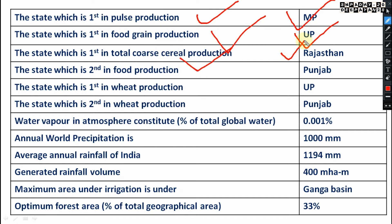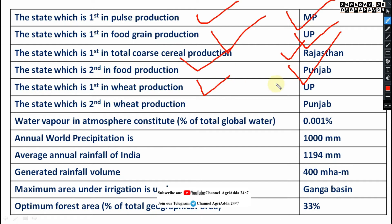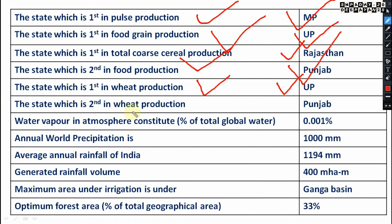First in total coarse cereal production including millets is Rajasthan. First in food grain production overall is Uttar Pradesh, and second in food production is Punjab.